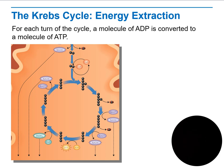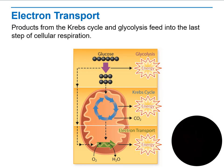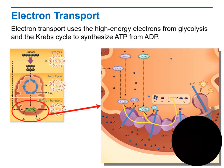For each cycle, a molecule of ADP is converted into ATP. At five places in the cycle, electrons accept a pair of high-energy electrons. NAD+ and FAD are converted into NADH and FADH2, as you can see. The products from the Krebs cycle and glycolysis then feed into the last step of cellular respiration.